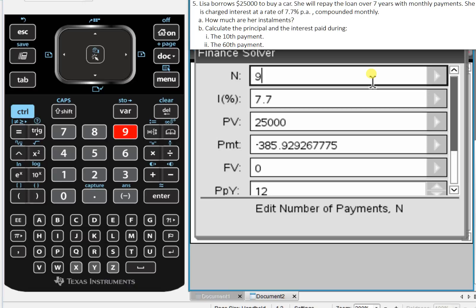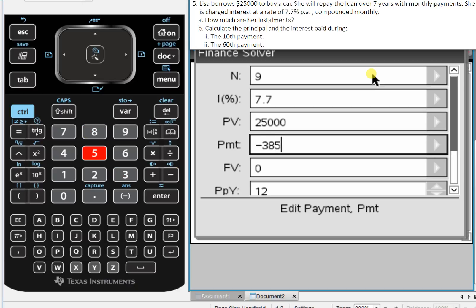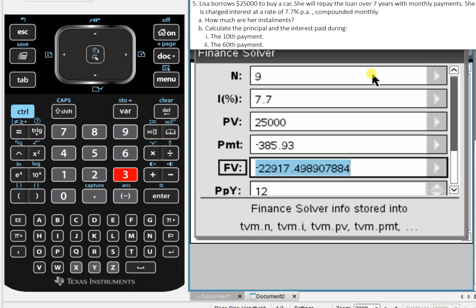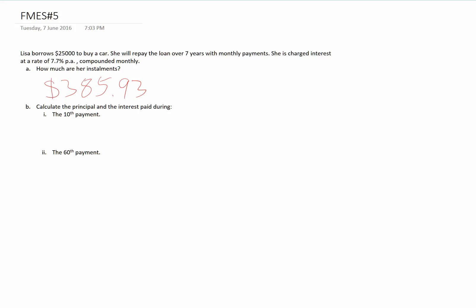The first thing we need to calculate is how much she owes before that 10th payment, so after 9 payments. After 9 payments, and I'm going to change this to exactly $385.93, how much does Lisa owe? She owes $22,917.50. Using our notation from Recurrence Relations, that's V9. The amount she owes after 9 payments is $22,917.50.